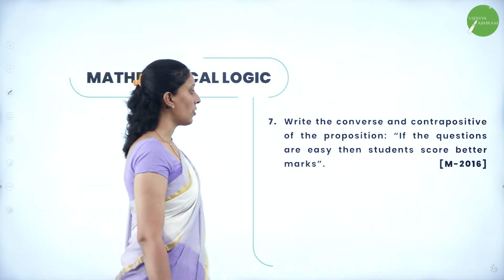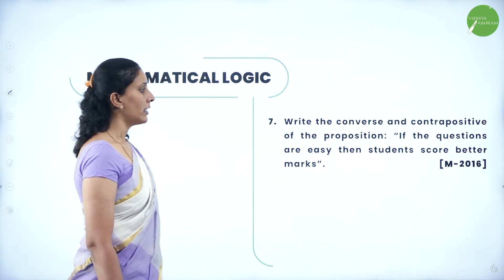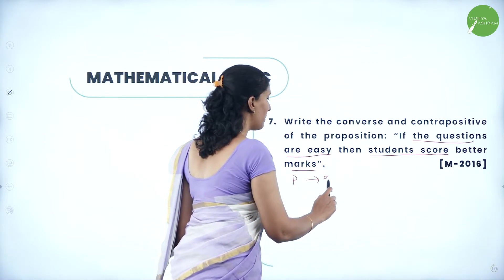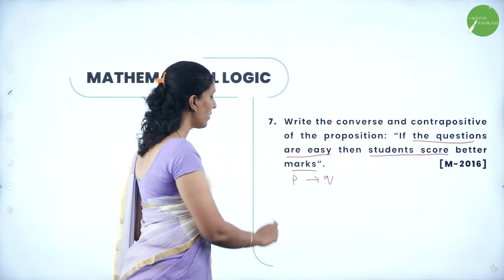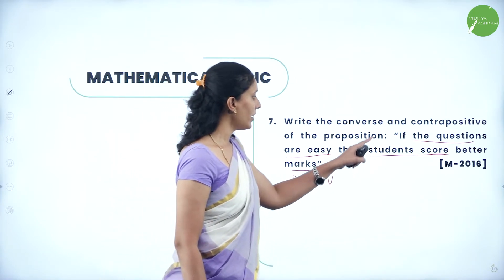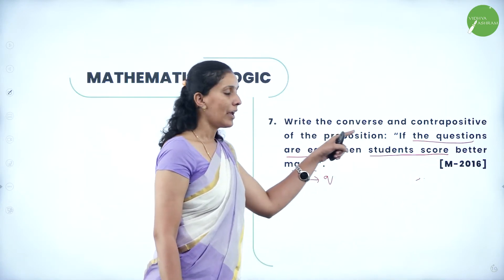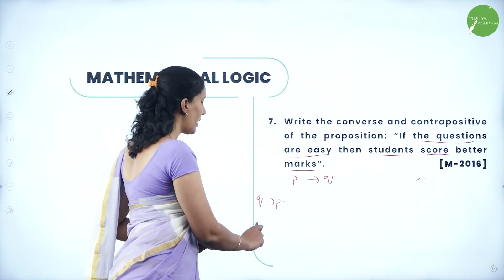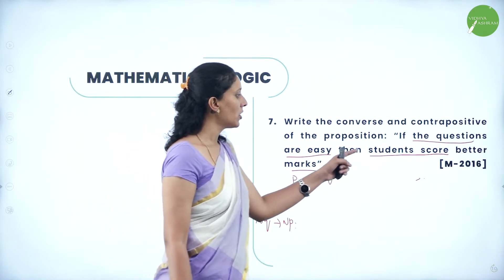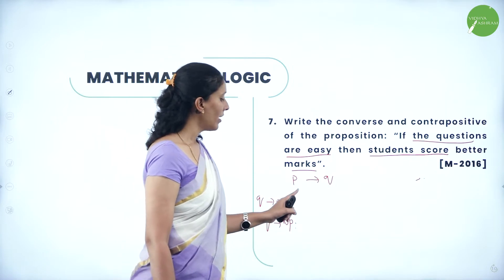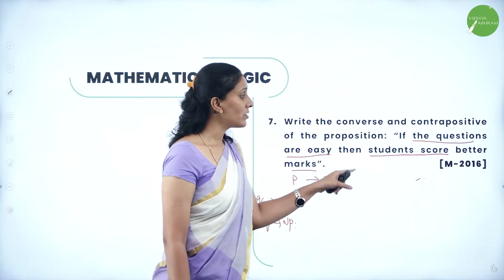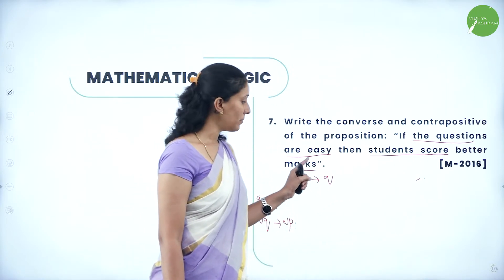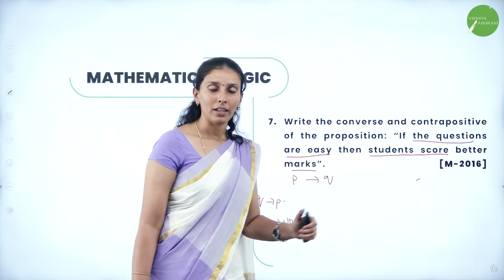Next, write the converse and contrapositive of the proposition: if the questions are easy, then the students score better marks. I will take the questions are easy as P, students score better marks as Q. So we have P conditional Q. Converse means Q implies P: if the students score better marks, then the questions are easy. For contrapositive, not Q implies not P: if the students do not score better marks, then the questions are not easy. Not easy can also be replaced by the word difficult.